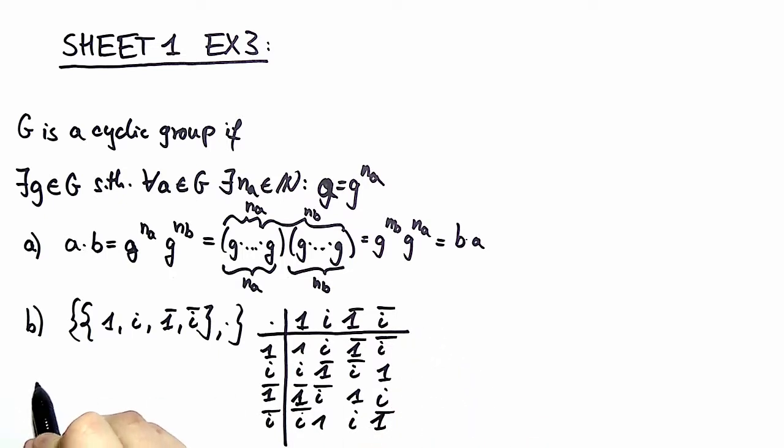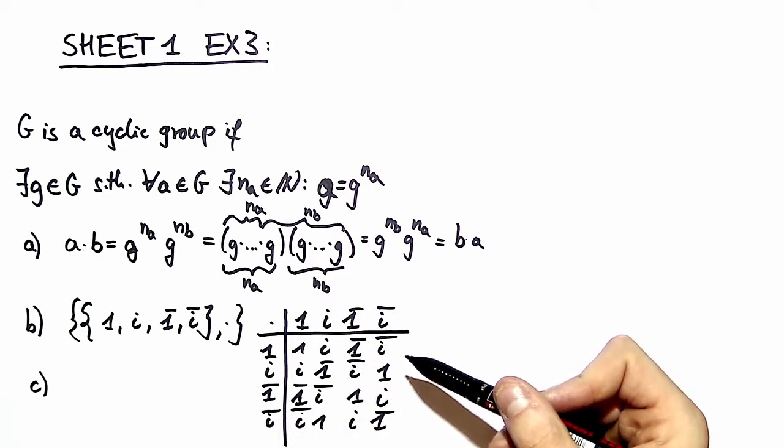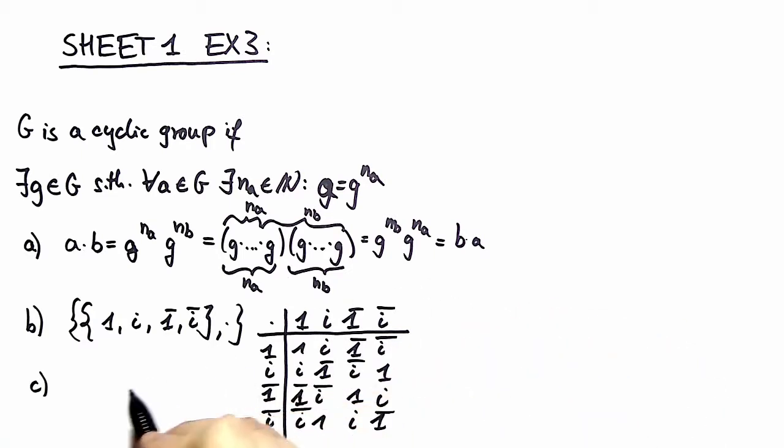In part C, the interesting things happen. We have to show that this group is a cyclic group. One way to see it is from the multiplication table, seeing that these are all shifted lines. The other way to see it is to find the generator. In an educated guess, we tried out with i being the generator, and it turns out this is correct. i to the power of 1 is of course i itself.